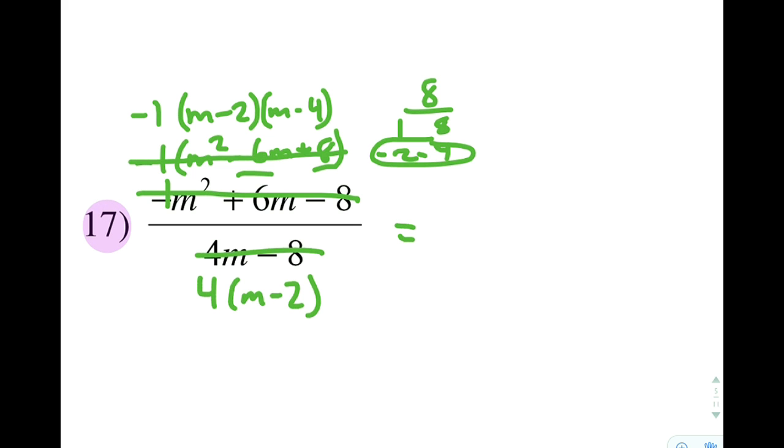Now, if I'm going to write my simplified expression, I'm going to look for things I can cross out or cancel from top to bottom. And I have a full m minus 2 group, a full m minus 2 group that can go away, leaving me with negative 1, m minus 4, over just a 4.